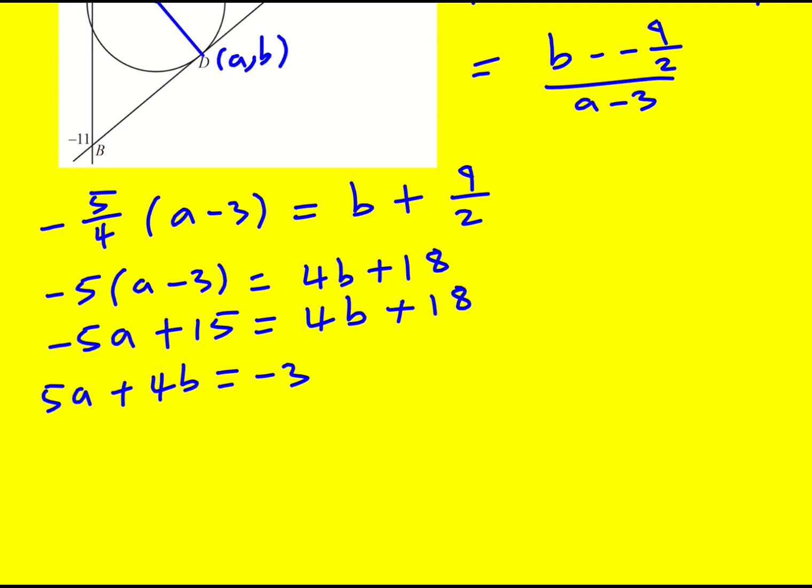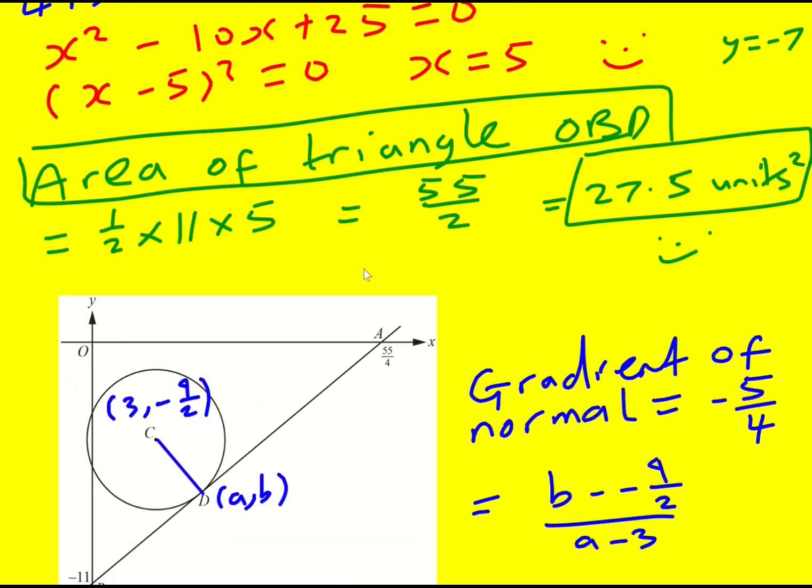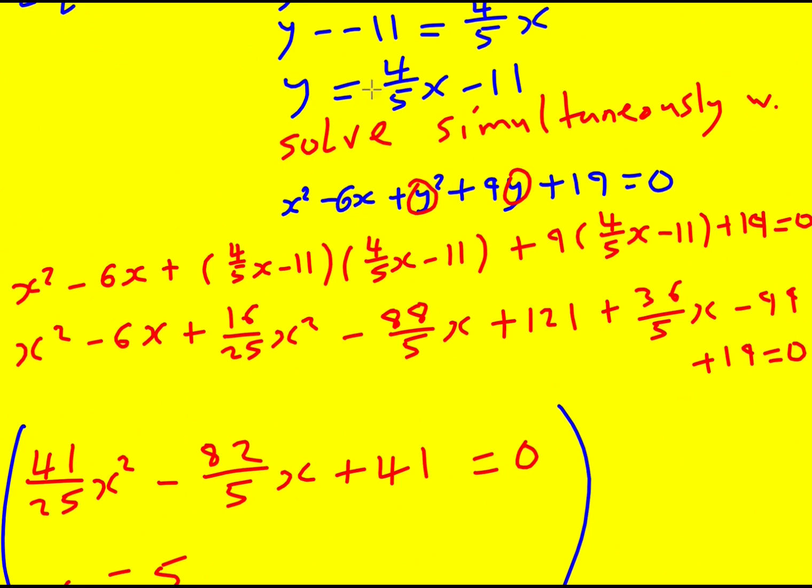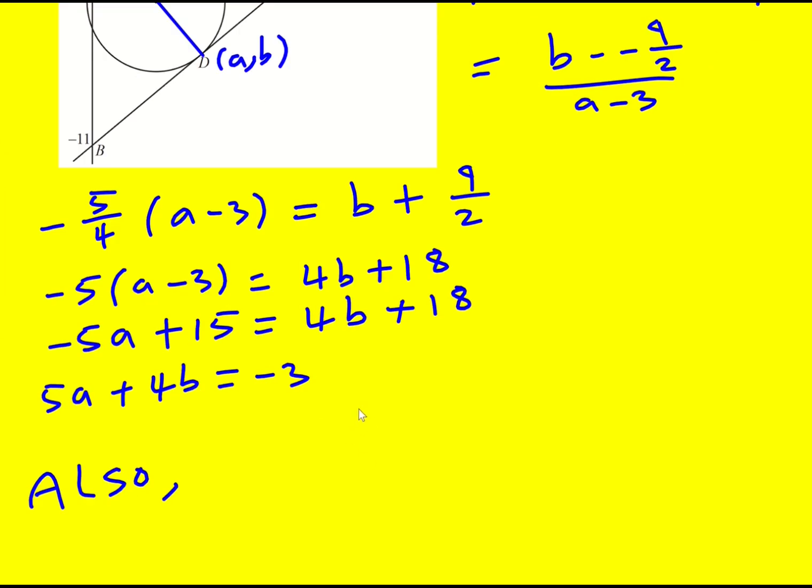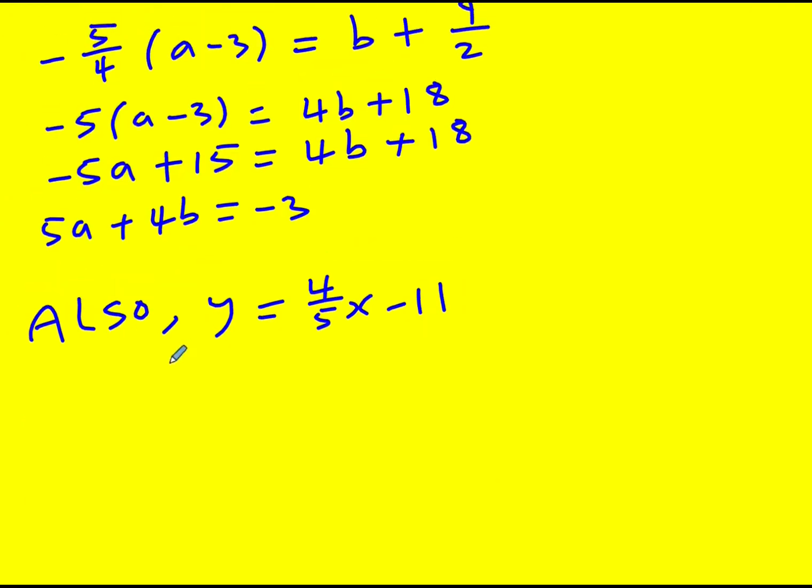And I've got an equation—it's going to be simultaneous equations ultimately. And also we know that the tangent goes through the point D, so I can actually substitute it in. Substitute it into y equals 4 over 5x minus 11. So b is going to be 4 fifths a minus 11. I've created a second equation. 5b is equal to 4a minus 55. And therefore 4a minus 5b is going to equal 55.